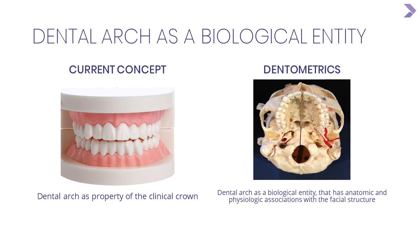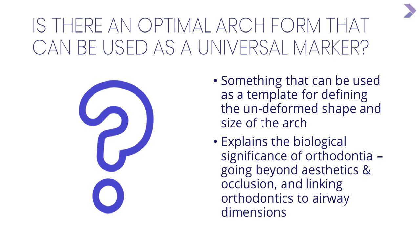As an orthodontist or dentist, looking at teeth and occlusion in isolation is the biggest problem, because the dental arch is not an isolated thing. The current theory uses a deformed arch to determine the patient's template for normal, which doesn't make sense. The question is: what is really the significance of orthodontia — straight teeth beyond aesthetics and occlusion? Now there are a lot of theories focusing on airway.